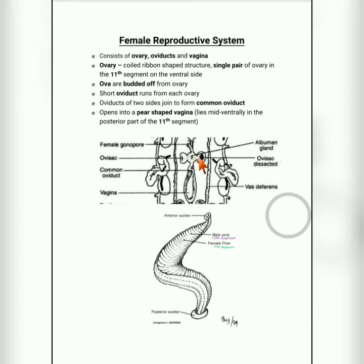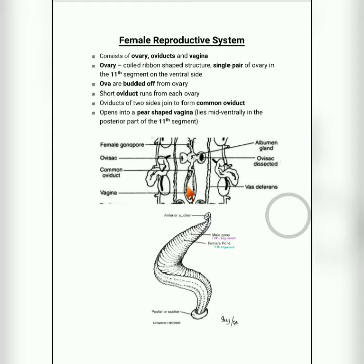From the ovaries, small oviducts arise. Both oviducts unite to form a common oviduct, which opens into a pear-shaped vagina.